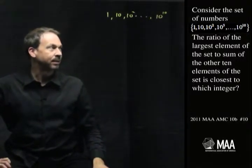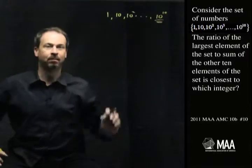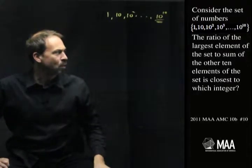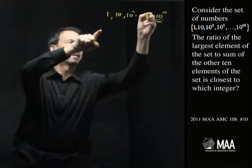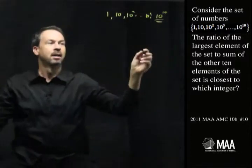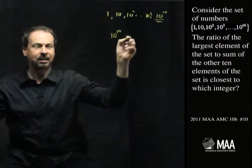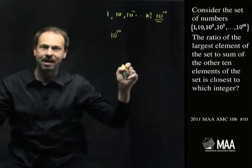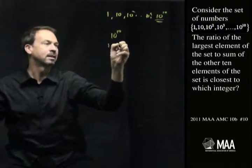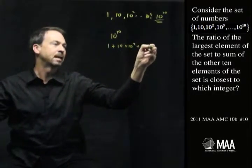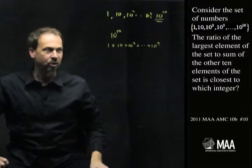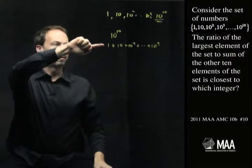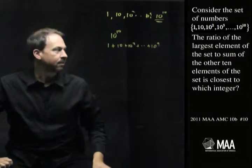I want the ratio of the largest number in this set — that's obviously 10 to the 10 — to the sum of the other 10 elements of the set. There are 10 more, going up to 10 to the 9. So I'm looking at 10 to the 10 over the sum: 1 plus 10 plus 10 squared, all the way up to 10 to the 9th.